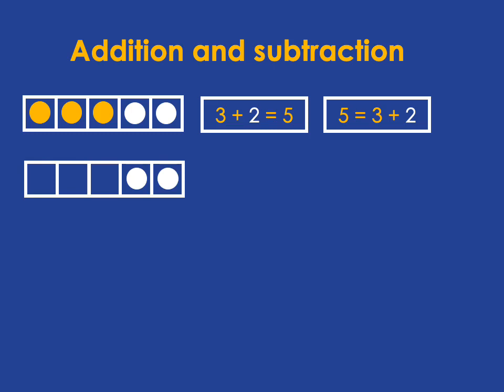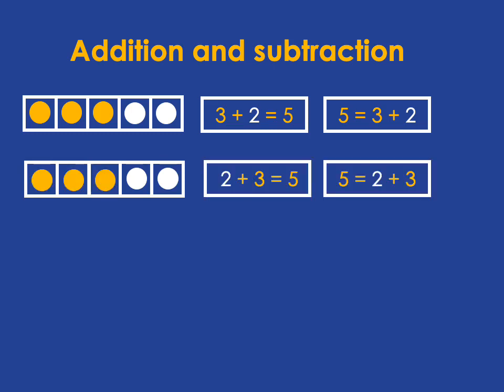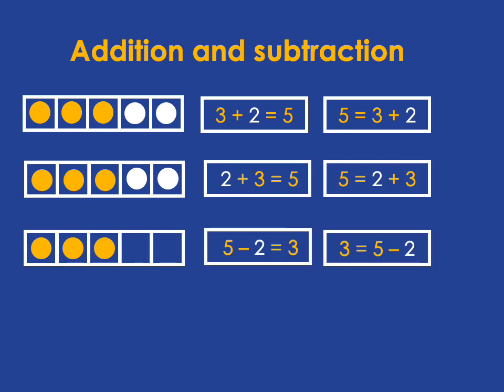We can also see that 2 plus 3 is 5, which we'll write like this. And we can also see that if we start with 5 and then we take away 2, we'll end up with 3. So 5 subtract 2 is 3.